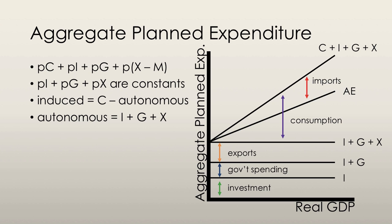Induced expenditure is consumption expenditure minus imports. Autonomous expenditure is investment plus government spending plus exports. That makes sense because autonomous expenditure is the level of expenditure when consumption expenditure is equal to zero — people are not buying anything, so they're not buying imports either. So if anyone asks you to calculate autonomous expenditure, it's going to be equal to I plus G plus X — investment plus government expenditure plus exports. This is the level of expenditure that would be planned if real GDP were equal to zero.